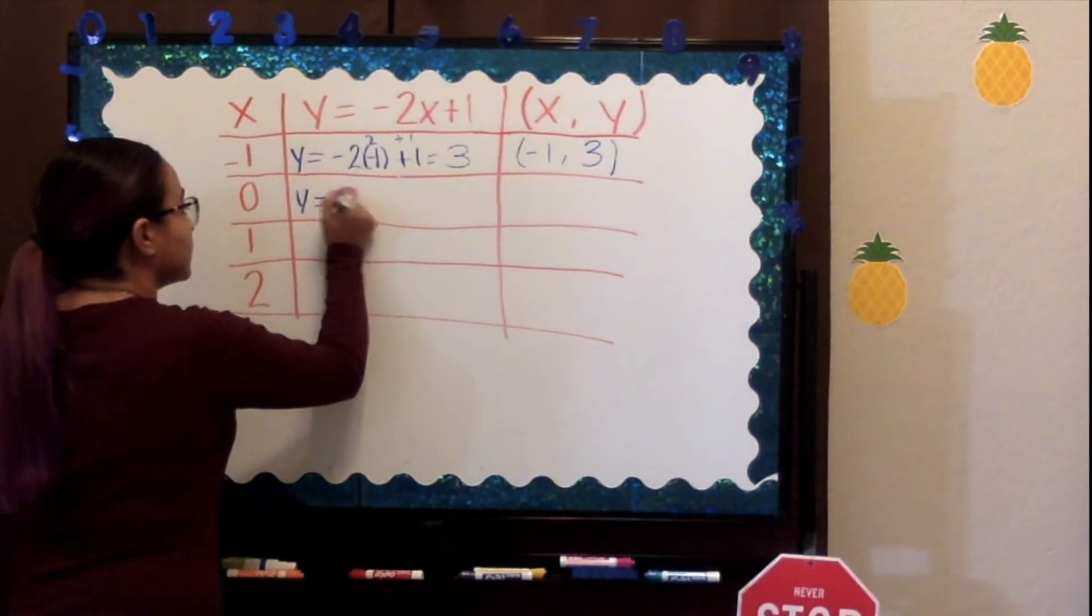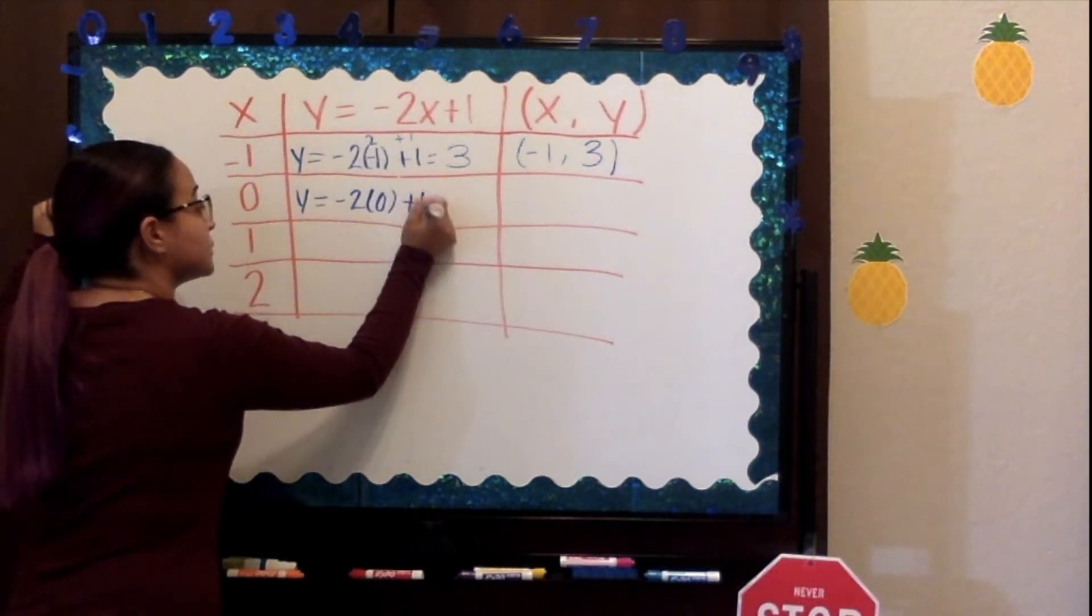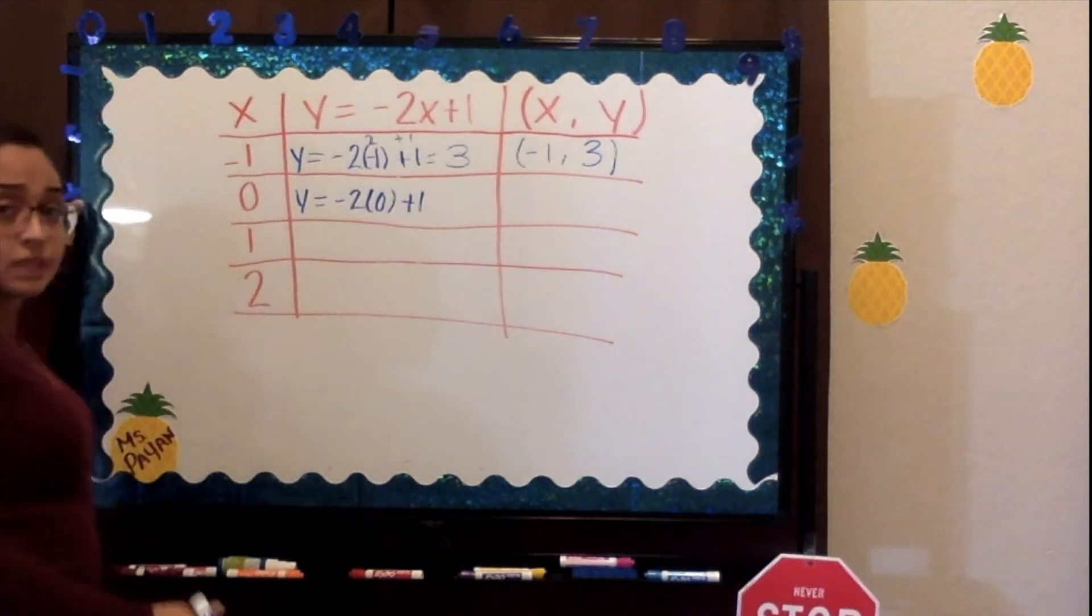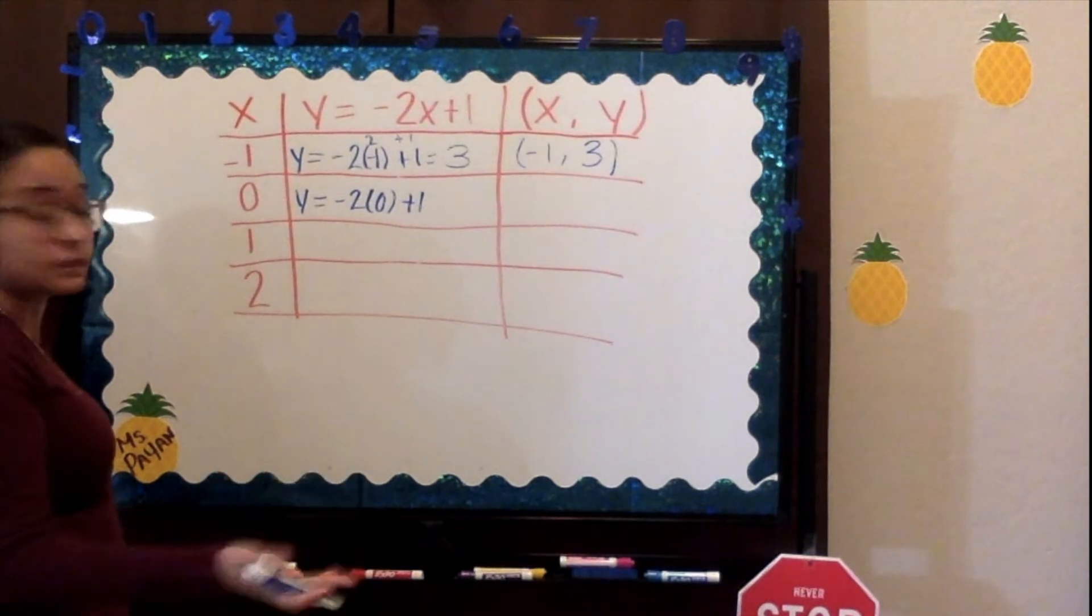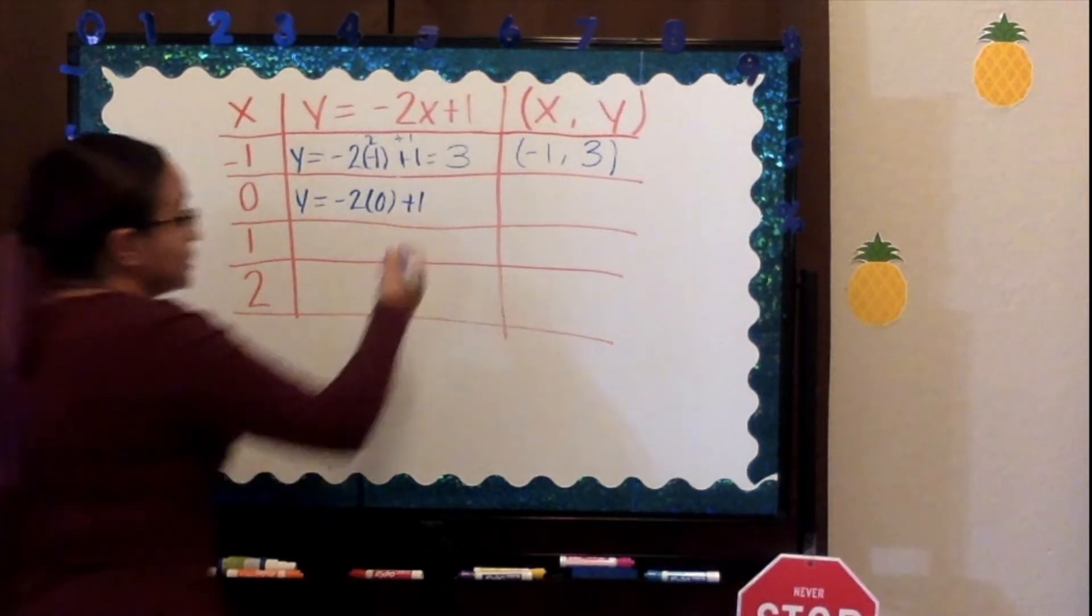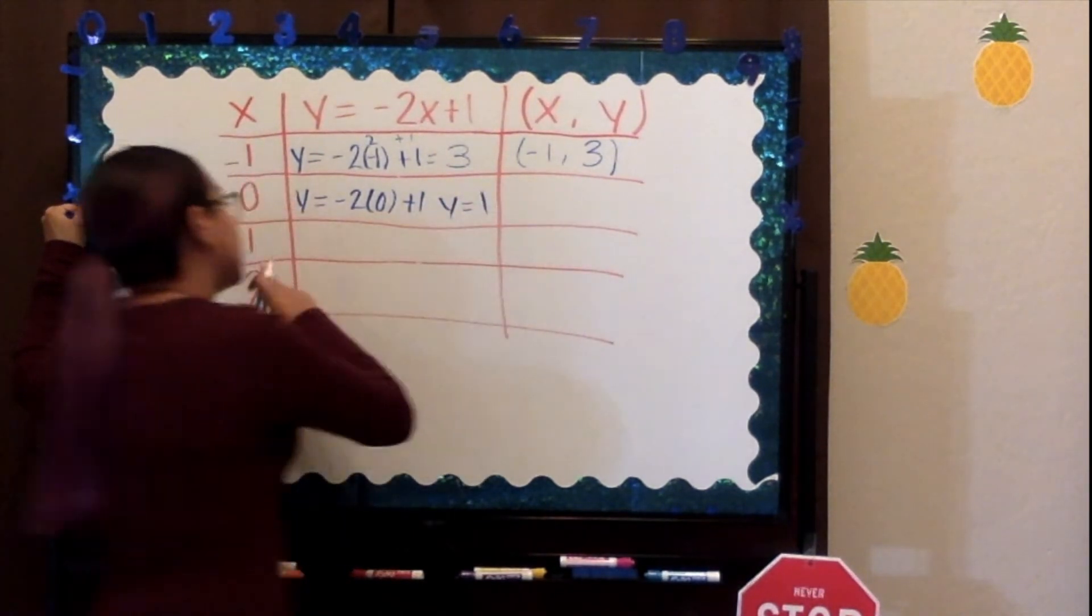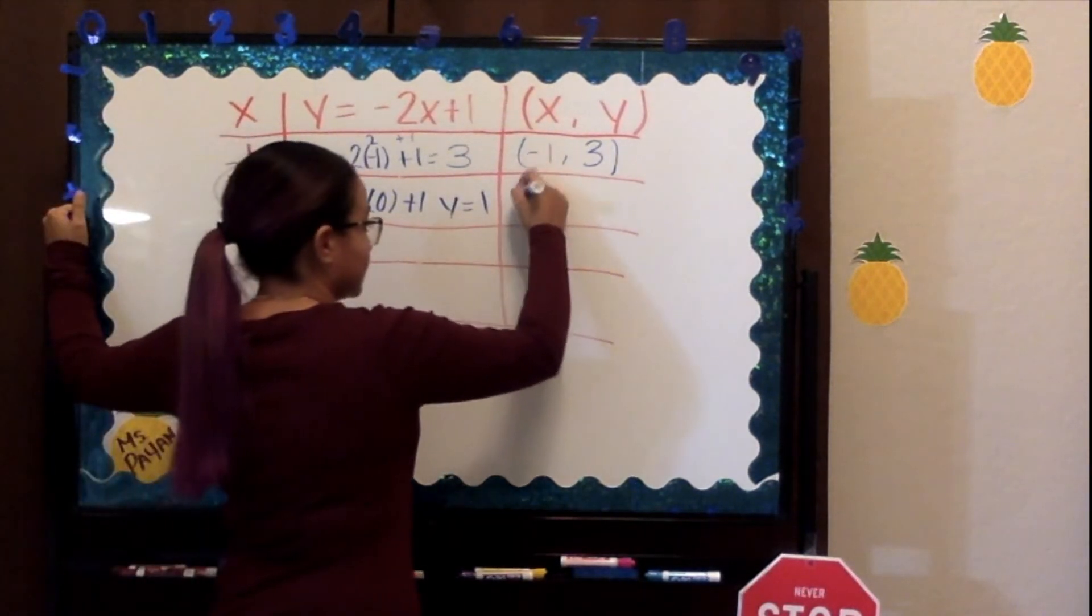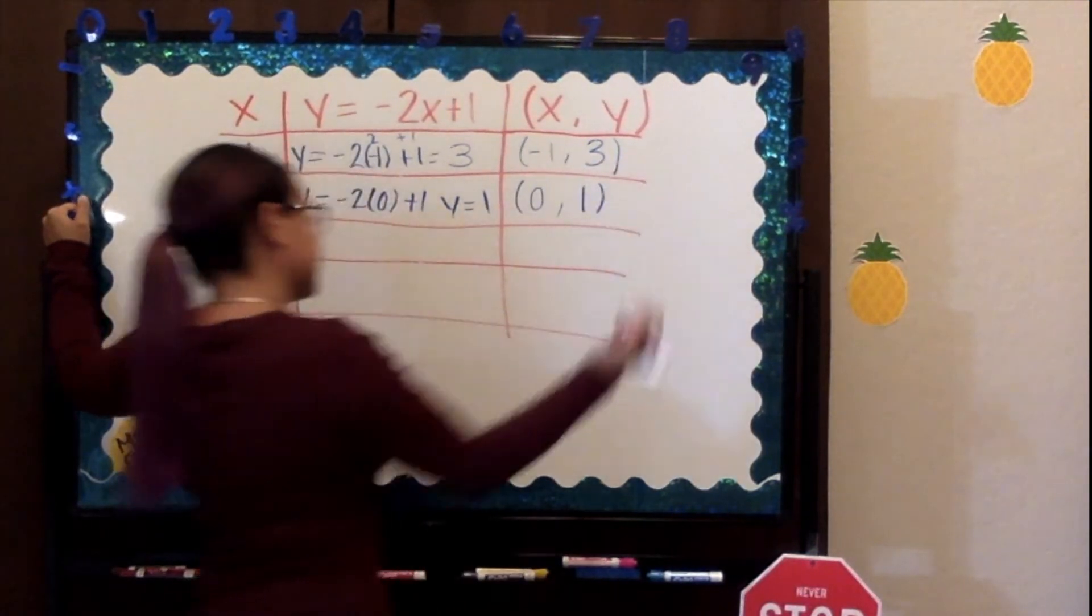We have y equals negative 2 times 0 plus 1. Negative 2 times 0 equals 0, because anything times 0 equals 0. So 0 plus 1 obviously is 1. Our value for y is 1. We know our value for x is 0, so we write it first, and our value for y is 1.